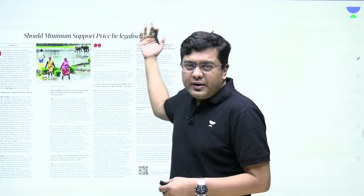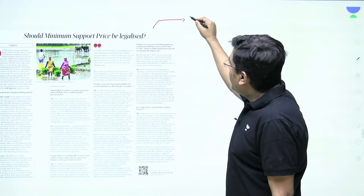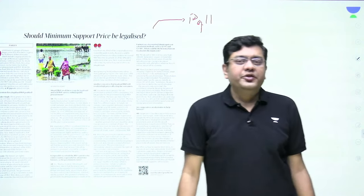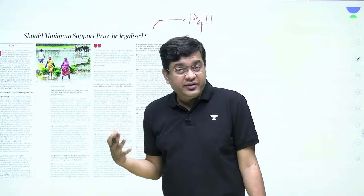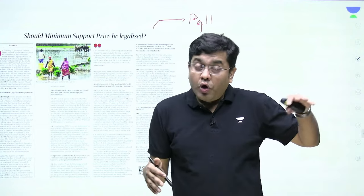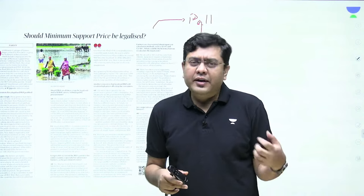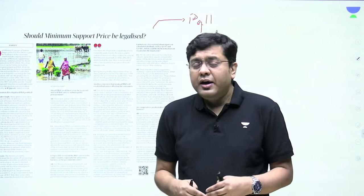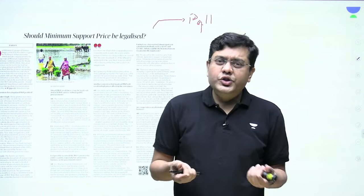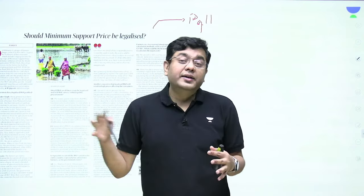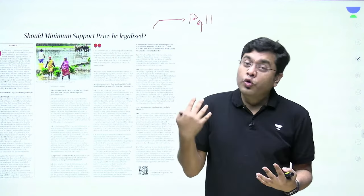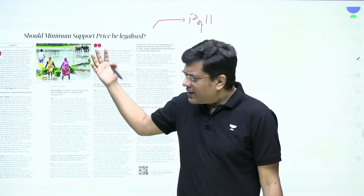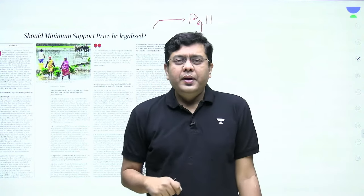The second article appears on page 11, relevant for GS Paper 3: 'Should minimum support price be legalized?' This debate has been ongoing since 2018, from farm agitations in Maharashtra to the 2020 farm protests and the current ongoing agitations. One side argues for providing MSP, the other argues against — both backed by economists and agricultural scientists. The article is in interview format.